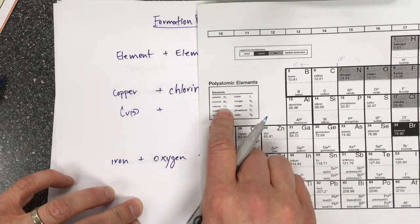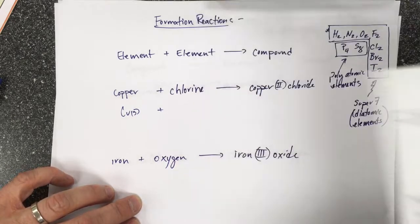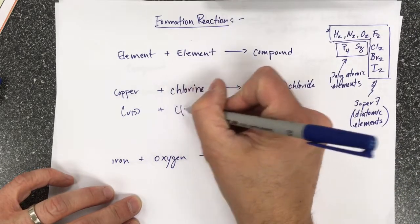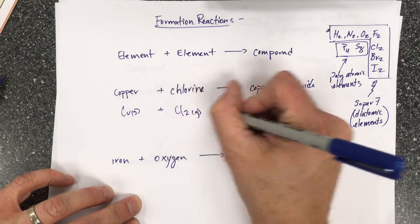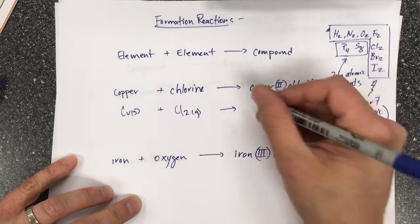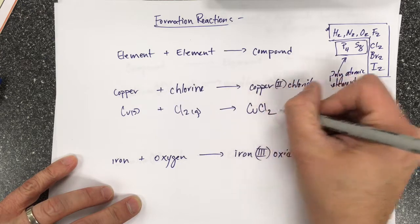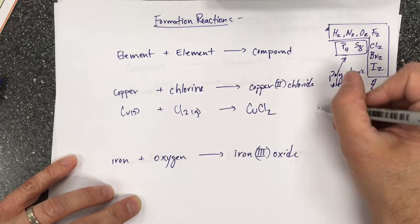So you need to get familiar with these. These are all going to be non-metals. So chlorine is Cl2 and it's a gas, and it makes copper chloride, which is CuCl2, and this is an ionic compound.